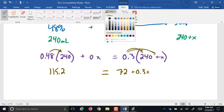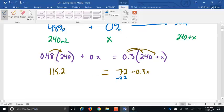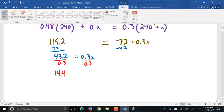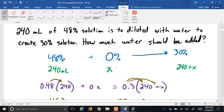Now, we only have 1X here, so we can just go ahead and solve by subtracting 72. I get 43.2 equals 0.3X. I'm going to divide by 0.3, which gives me what? 144 equals X. So I need 144 milliliters of water added to that. Bless you.